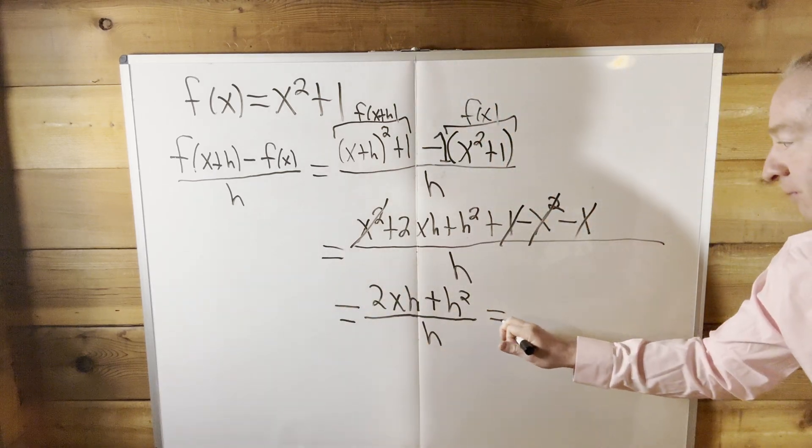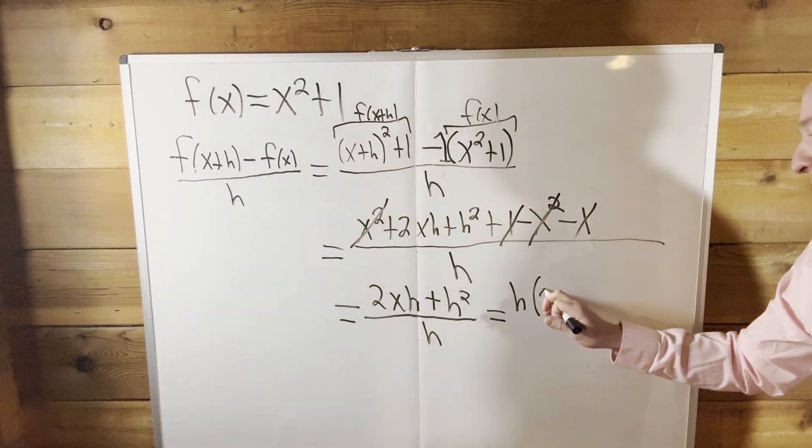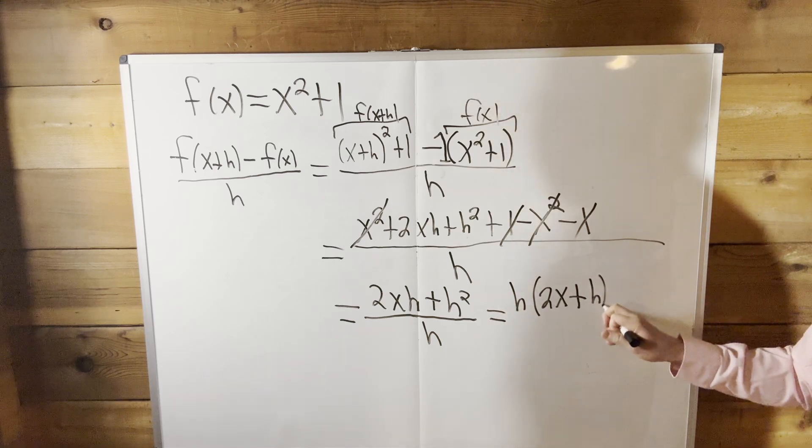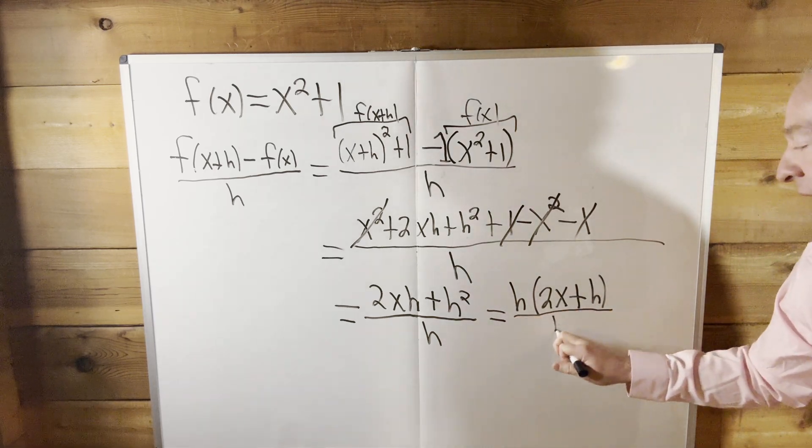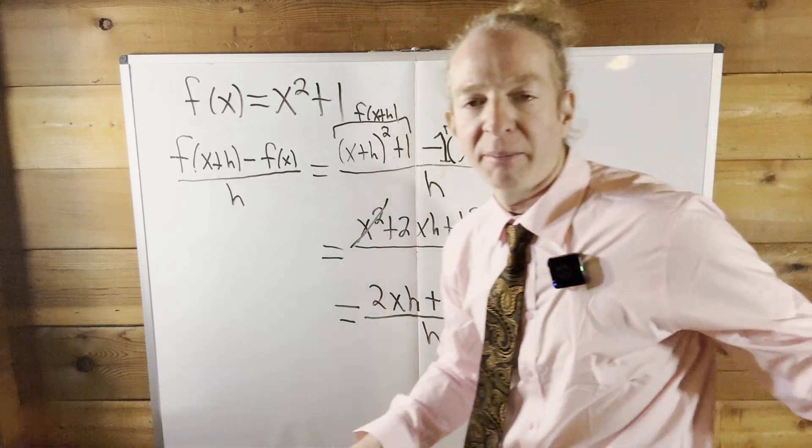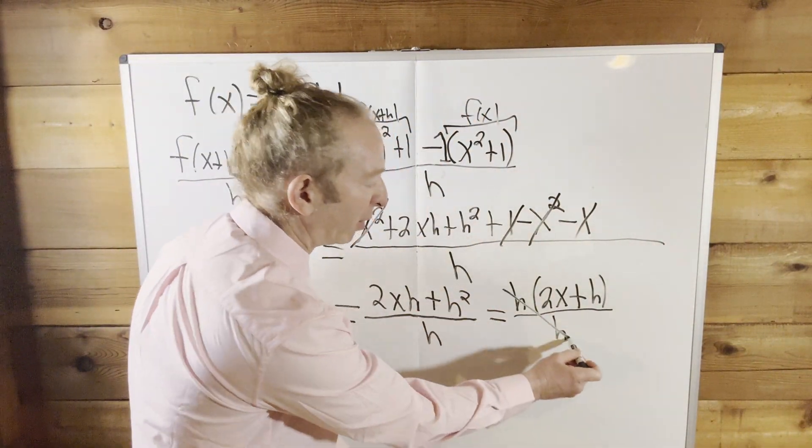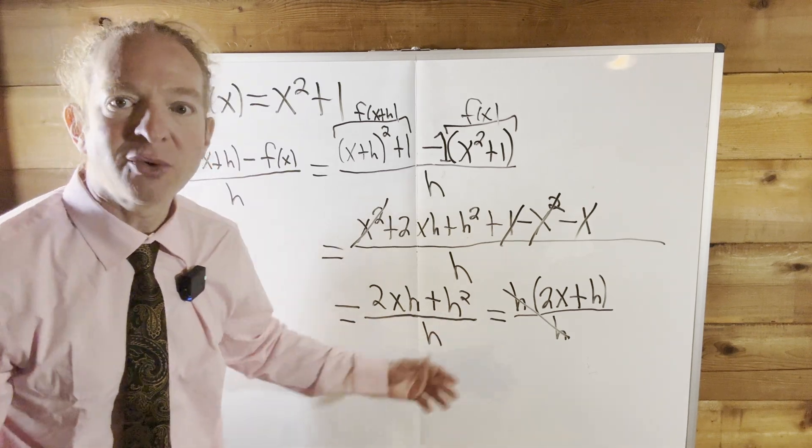So what we're going to do now is we're going to factor out an h or pull out an h. So this is equal to h(2x + h) all being divided by h, right? It's all being divided by h in this case. And look what happens here, right? These go away. Boom. And then we're left with 2x plus h.